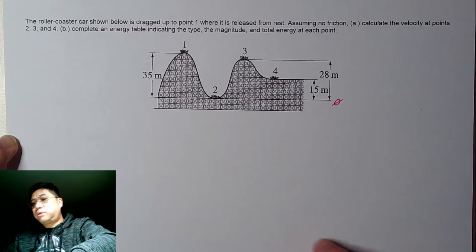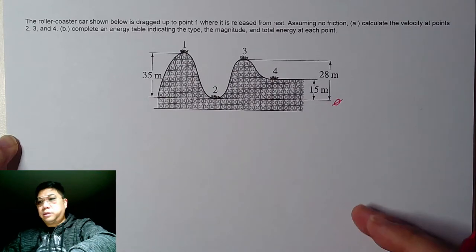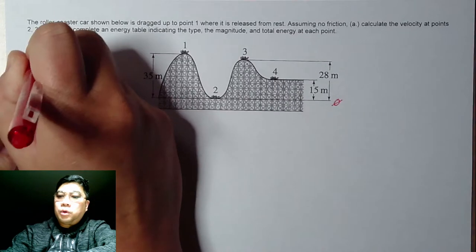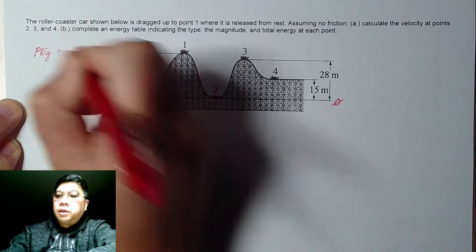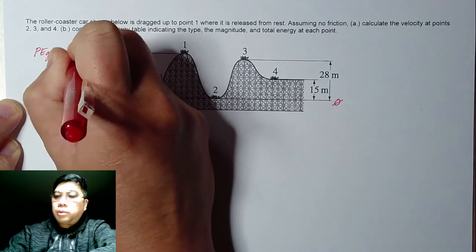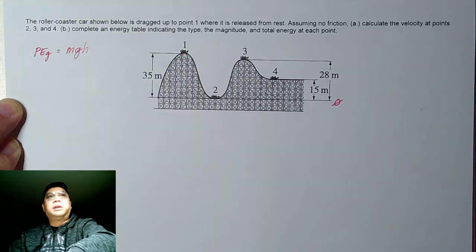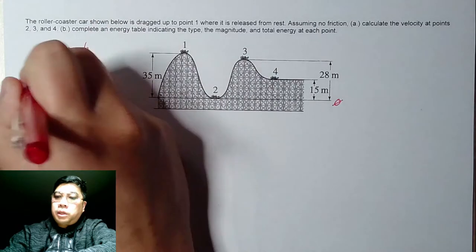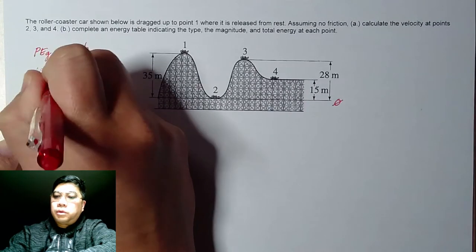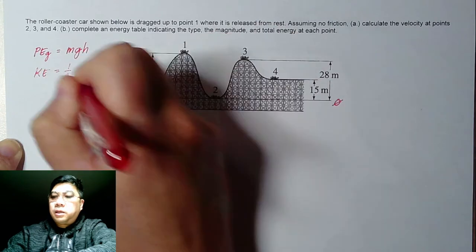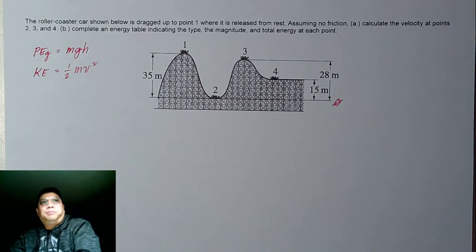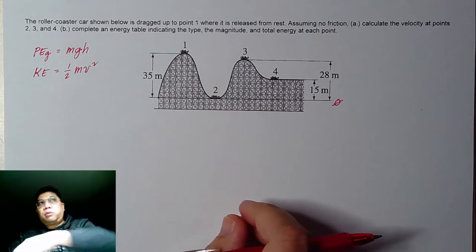There are two types of energy used in this concept. The first is gravitational potential energy, which is mass multiplied by the acceleration due to gravity (10 m/s²) multiplied by the height: PE = mgh. The second is kinetic energy: KE = ½mv². The total energy should always be equivalent at each point.